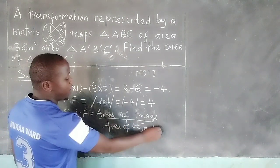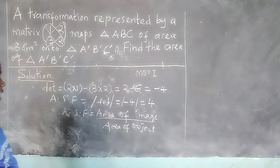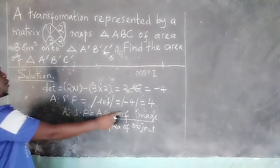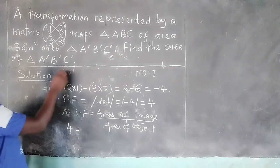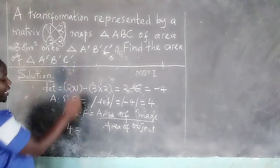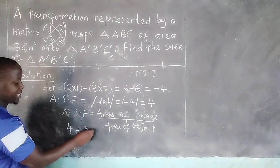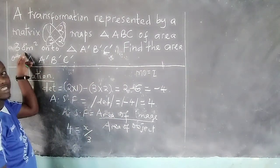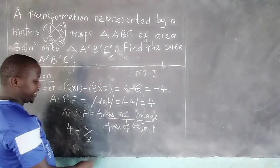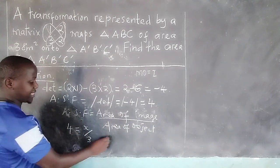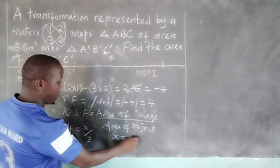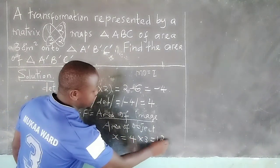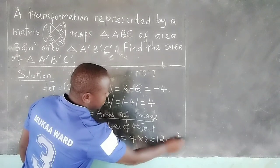Such that now, because we have area scale factor of 4, and area of image is not known—in fact it is what we want to calculate—then we will say x out of area of object, which is already given as 3. Therefore, for this case now, to remain with x, we can say x equals 4 multiplied by 3, giving us 12 square centimeters.